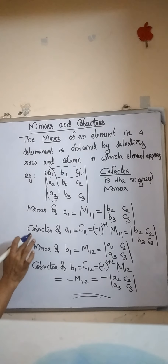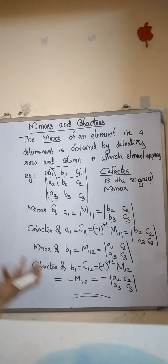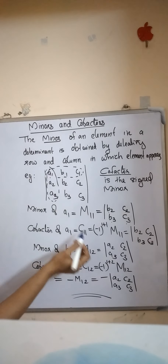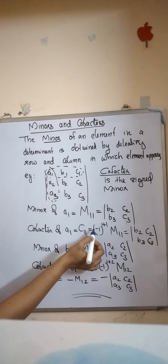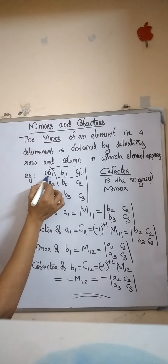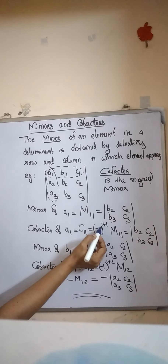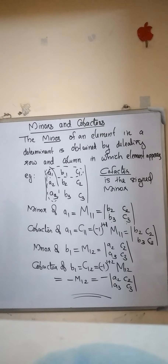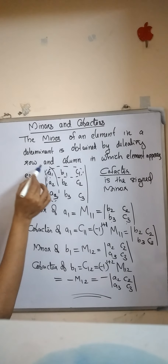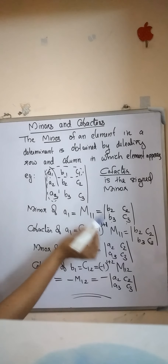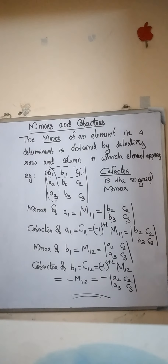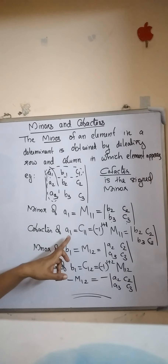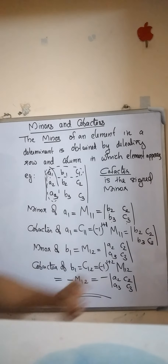The cofactor of a11 is the signed minor. The cofactor C11 equals minus 1 raised to 1 plus 1 into M11. The exponent's first number represents the row and the second represents the column. Since a1 belongs to the first row and first column, minus 1 raised to 1 plus 1 equals minus 1 raised to 2, which equals plus 1. So the cofactor of a11 is the same as the minor of a1.